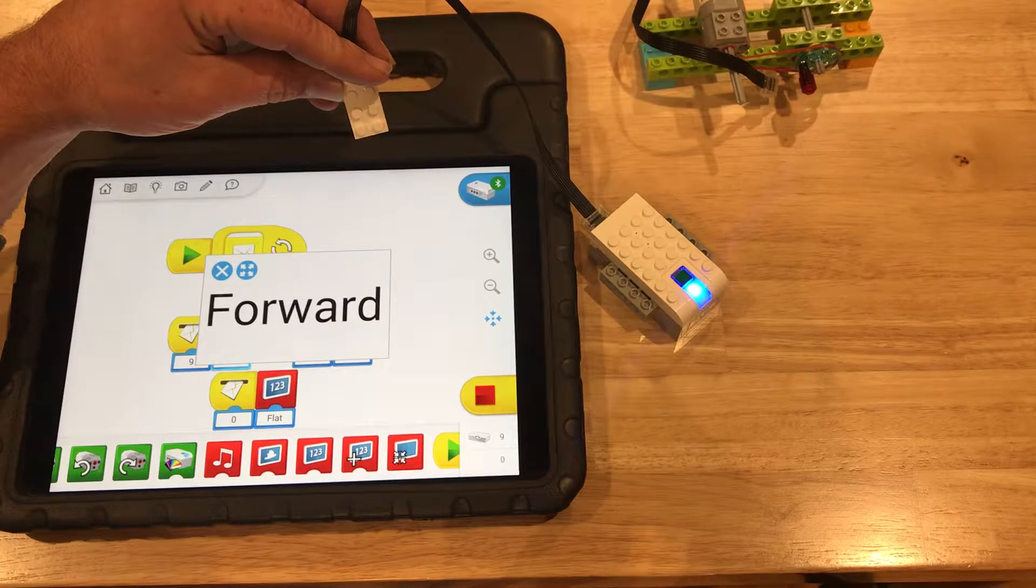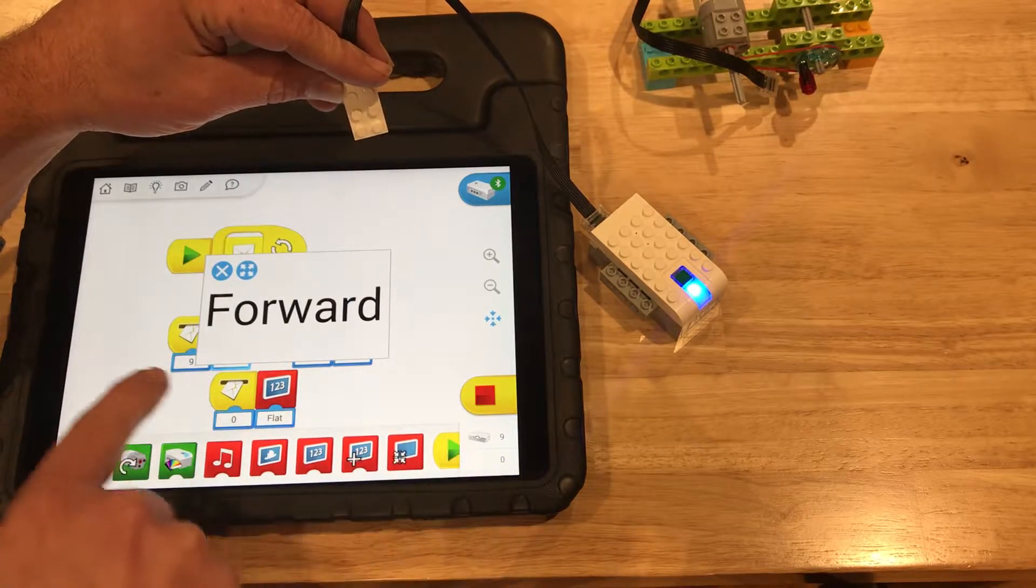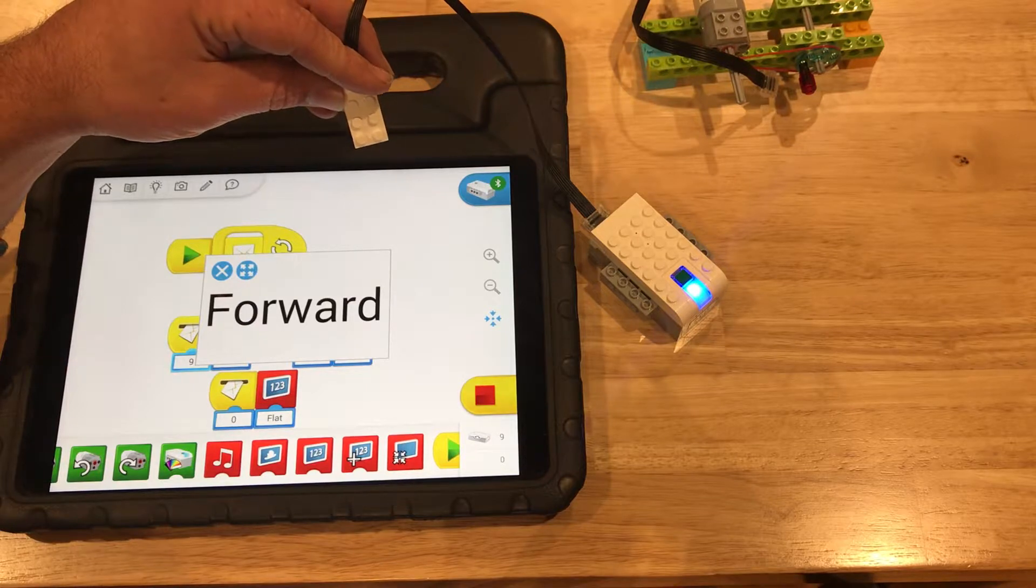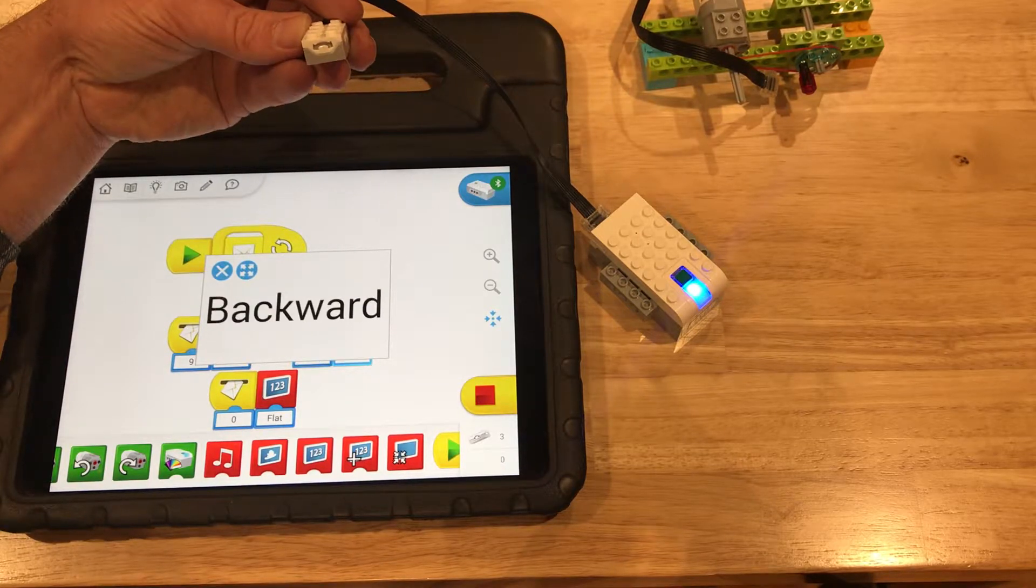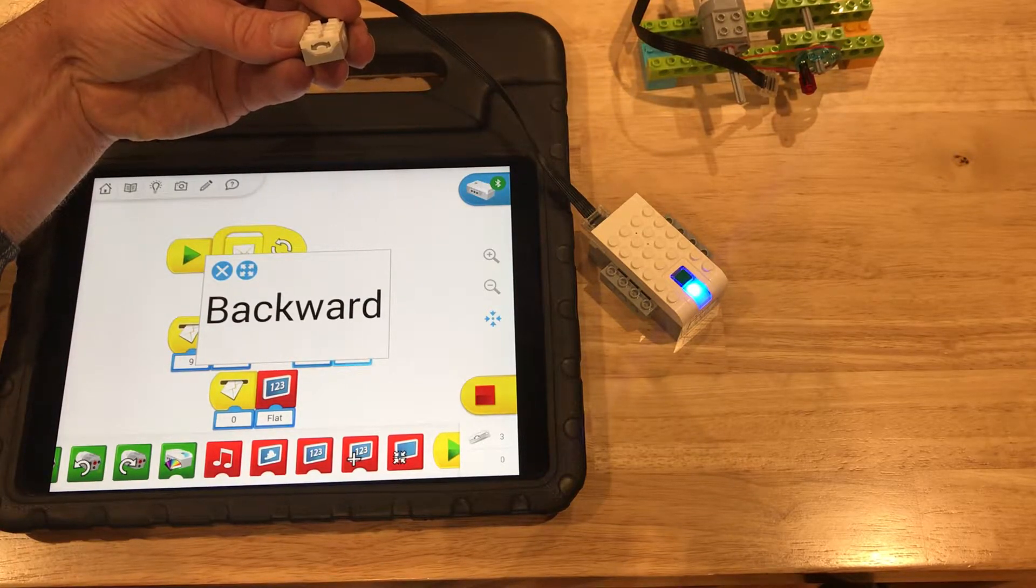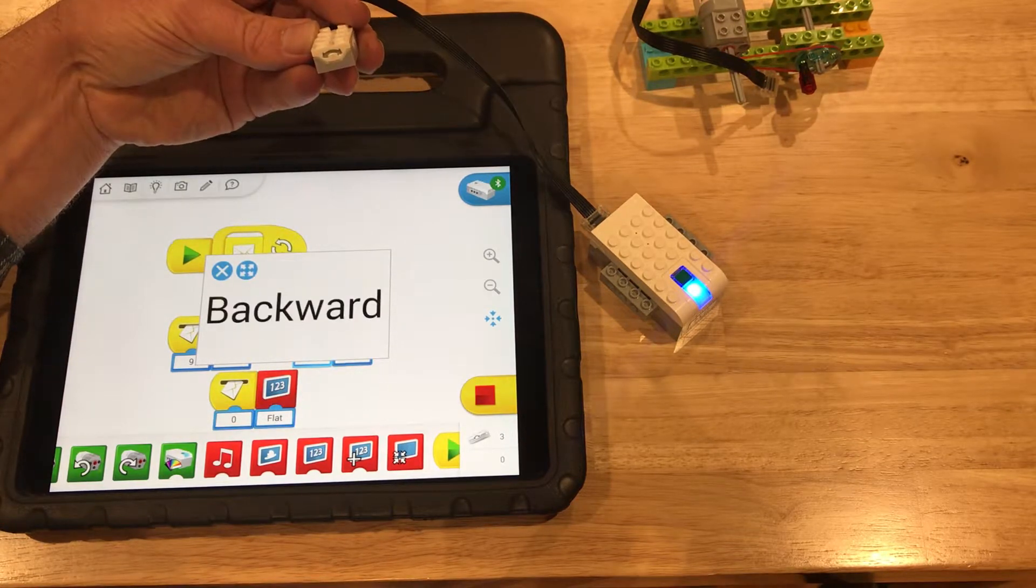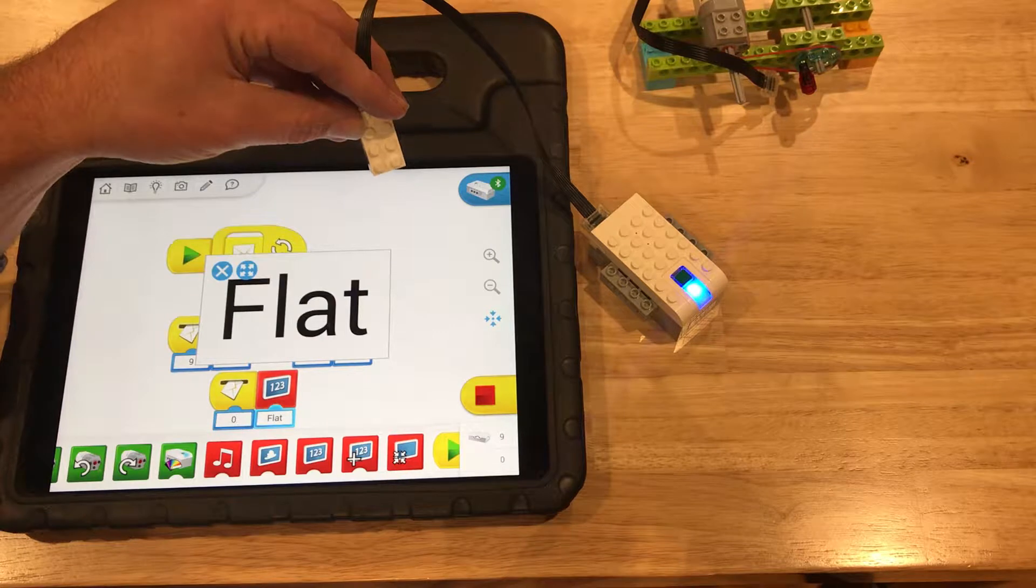If I tilt forward, it sees a nine, it reads the mailbox for nine, and it says forward, just like we programmed. If we tilt it back, then backward shows up. So flat, backward, flat, forward.